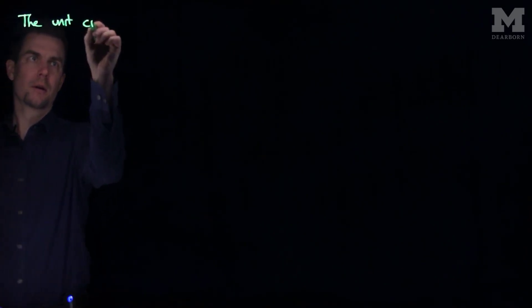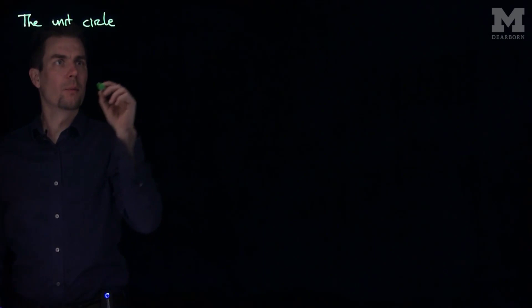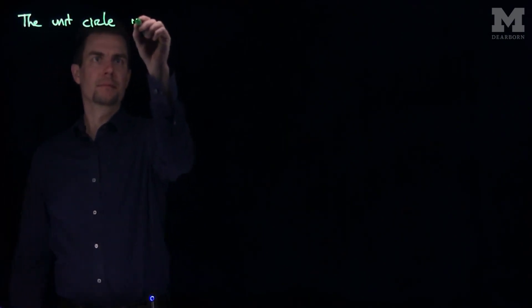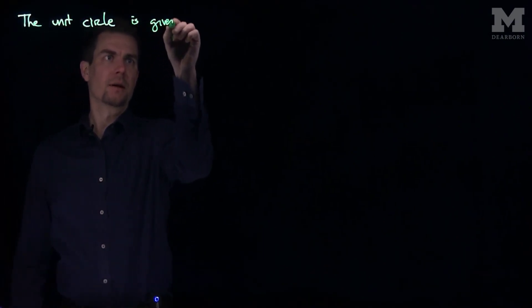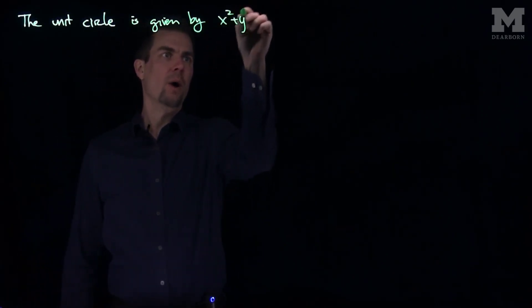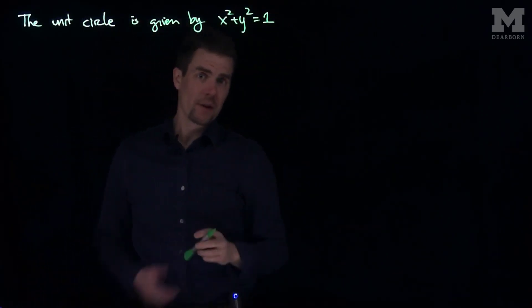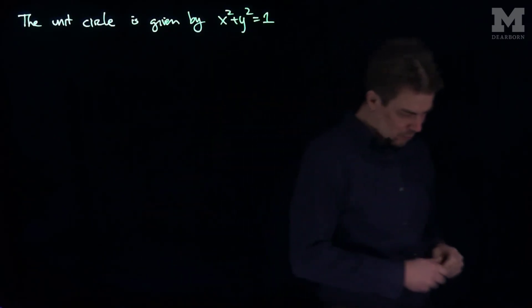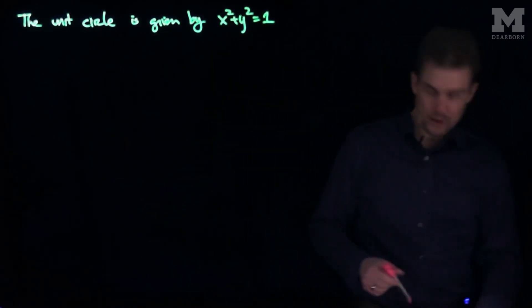The unit circle from ordinary trigonometry is given by the formula x squared plus y squared is equal to 1. That is the algebraic relationship, but we can think of this geometrically as well.